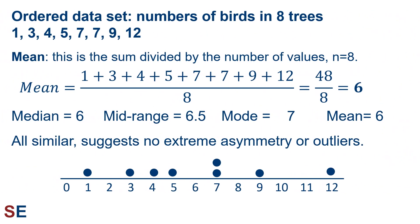Our final location statistic is the mean, which is the sum of all the values divided by the number of values, n equals 8. So the mean will be 1 plus 3 plus 4 plus 5 plus 7 plus 7 plus 9 plus 12 is 48, divided by 8, gives us 6. Our four location statistics are: median 6, mid-range 6.5, mode 7, mean 6. They're all similar, which suggests there's no extreme asymmetry or outliers, and we can see that in a figure of the values on the number line.